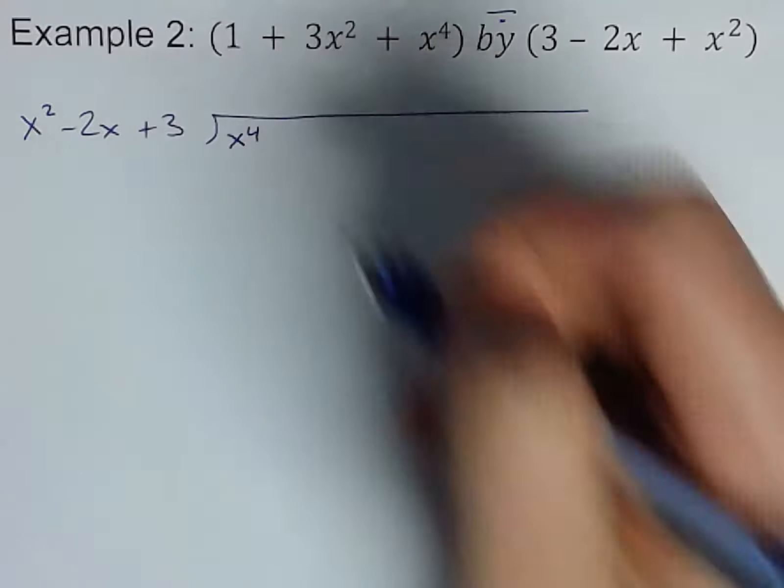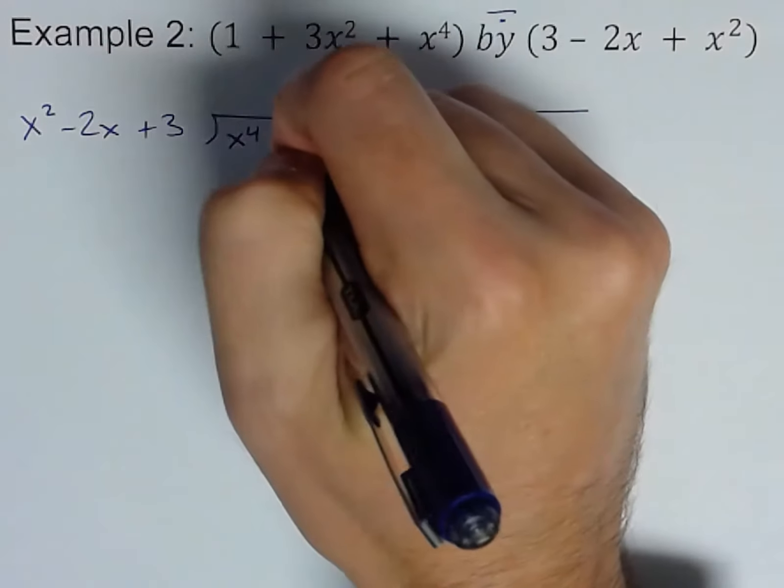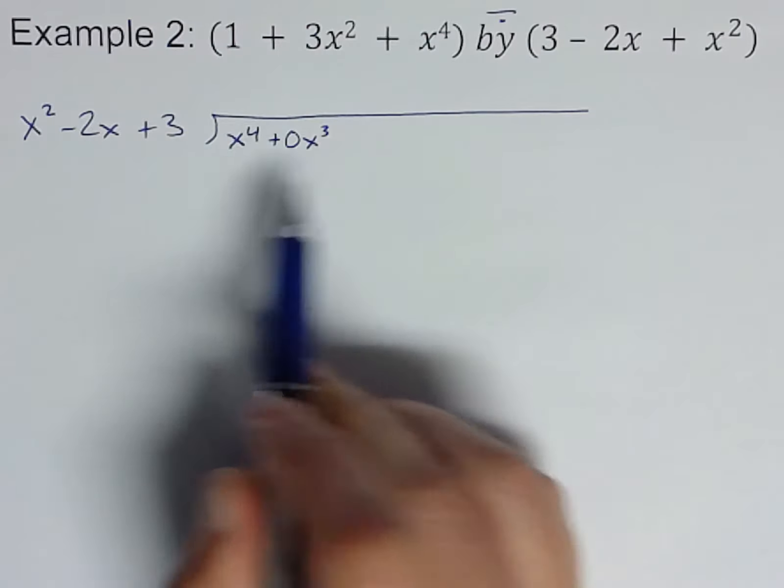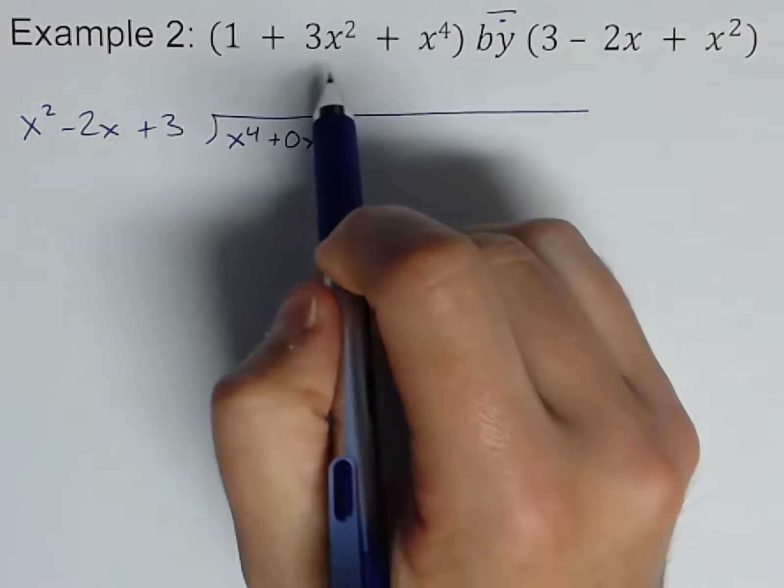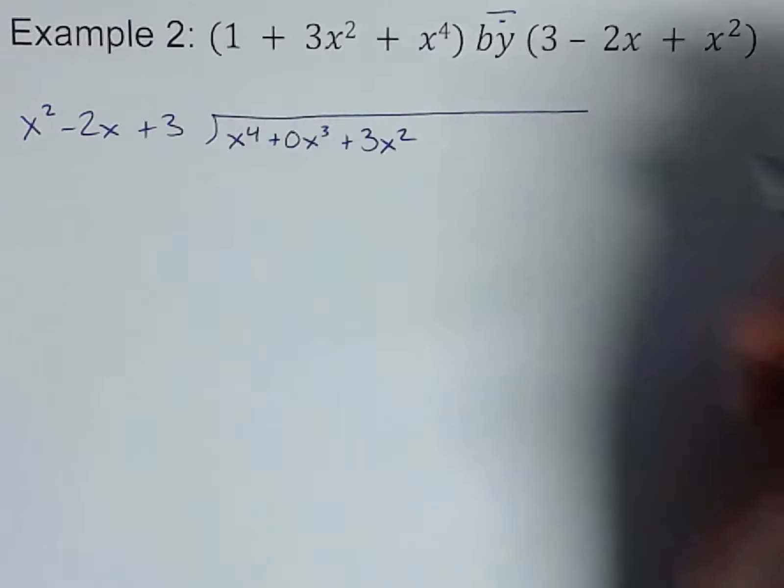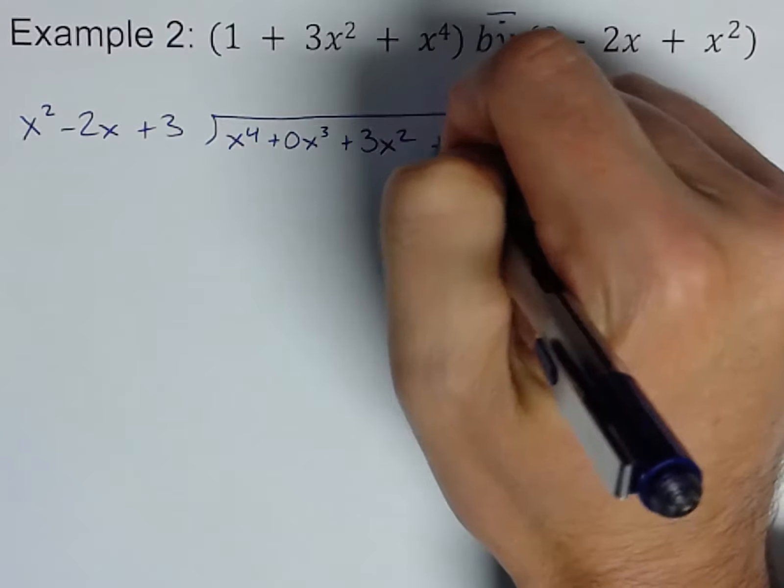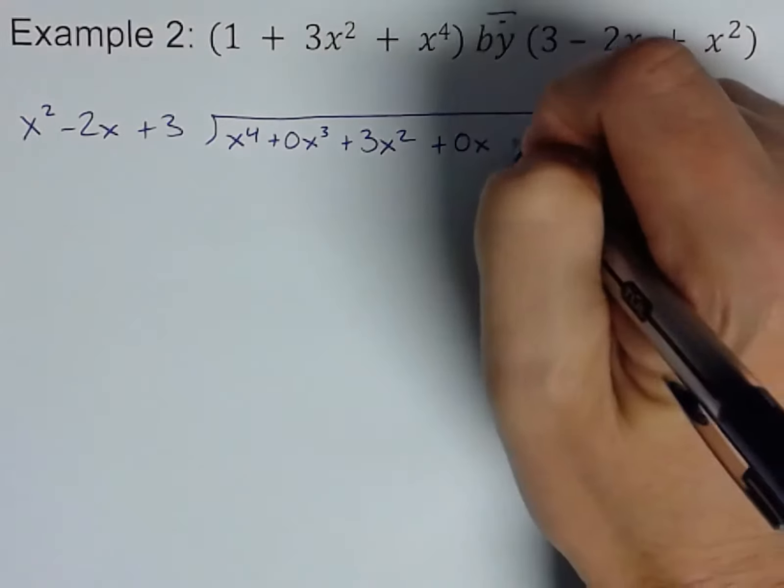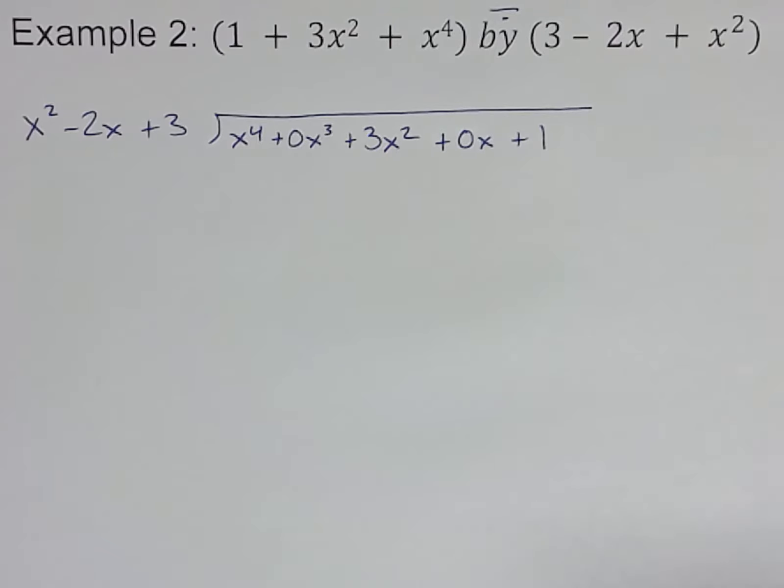Let's rewrite this in descending order. x to the fourth is the highest power. Notice there's no cube in there, so I like to do plus 0x cubed. It just spaces things out for me, otherwise you're going to run into problems. Plus 3x squared. Notice there's no x term, no linear term, so plus 0x.